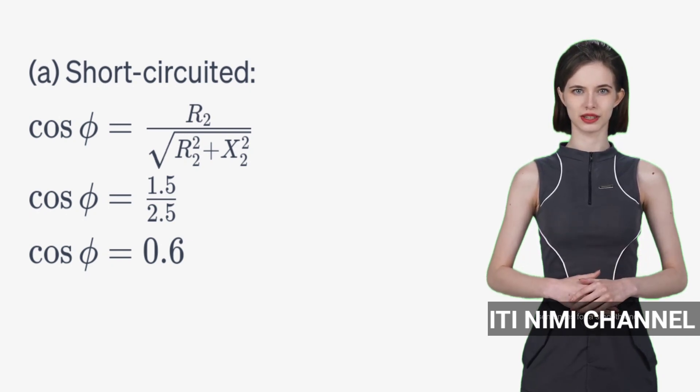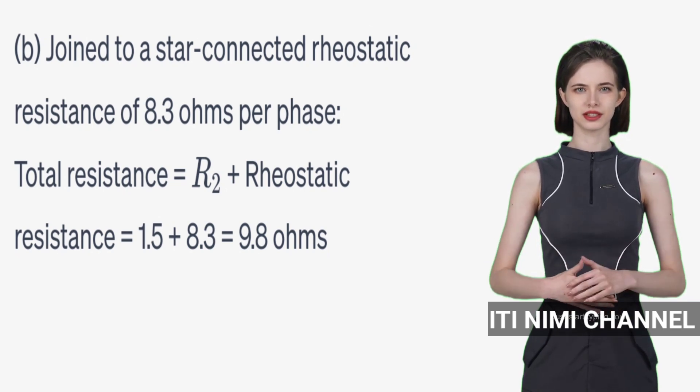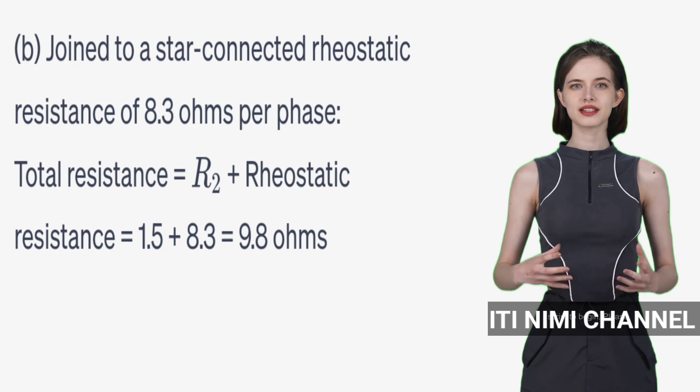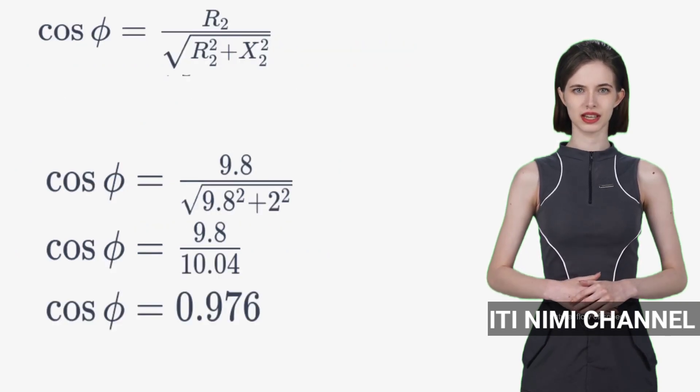But, when the slip rings are connected to a star-connected rheostatic resistance of 8.3 ohms per phase, the power factor increases to approximately 0.976, also lagging.